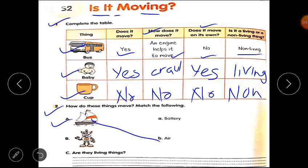Air and water help the boat to move. Robot needs battery to move. Clear?